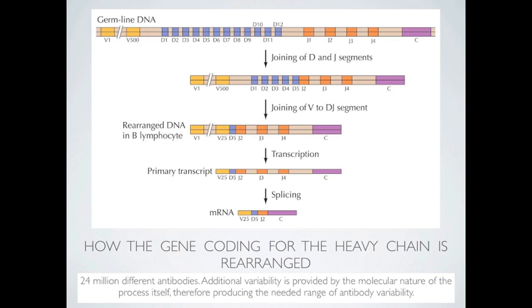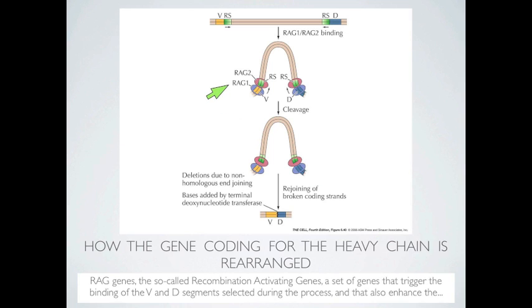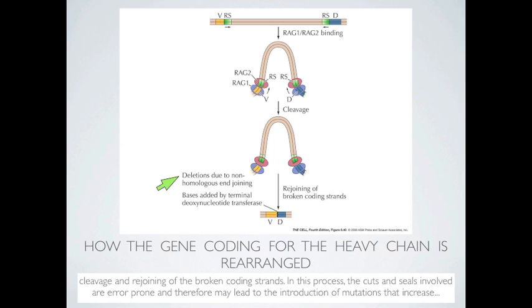Additional variability — which is needed due to the high number of possible infectious organisms we will face — is provided by the molecular nature of the process itself. The rearrangements involved in antibody gene maturation are driven by very small segments of sequence identity, recognized by the RAG genes, the recombination activating genes. These genes trigger the binding of the V and D segments selected during the process, and also enhance the cleavage and rejoining of the broken coding strands.